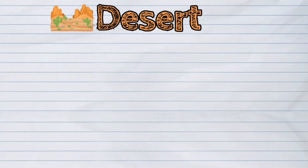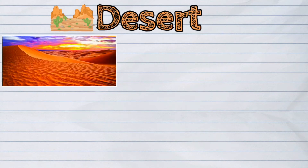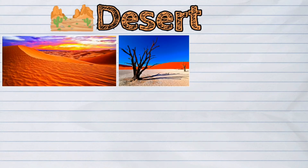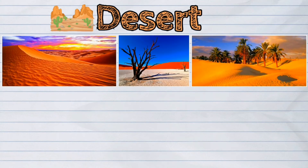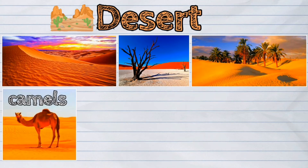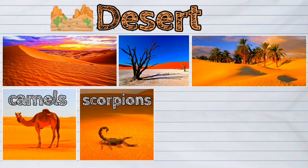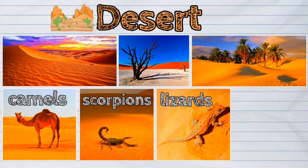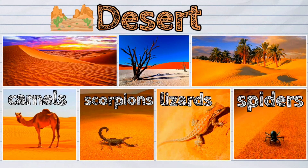A desert is also a place where animals can live. It is a very hot and dry region. Camels, scorpions, lizards, and spiders thrive in the desert.